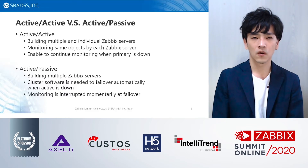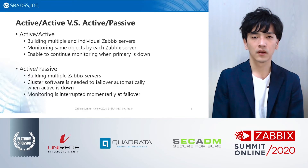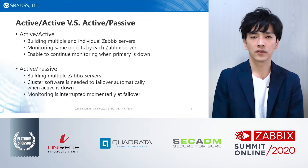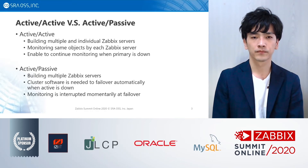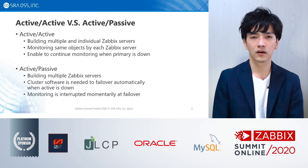Cluster configurations are generally classified into Active-Active Cluster and Active-Passive Cluster. In an Active-Active Cluster, multiple individual Zabbix servers run concurrently, and each Zabbix server monitors the same objects. If one Zabbix server goes down, the Active-Active Cluster can continue monitoring by using the other servers.